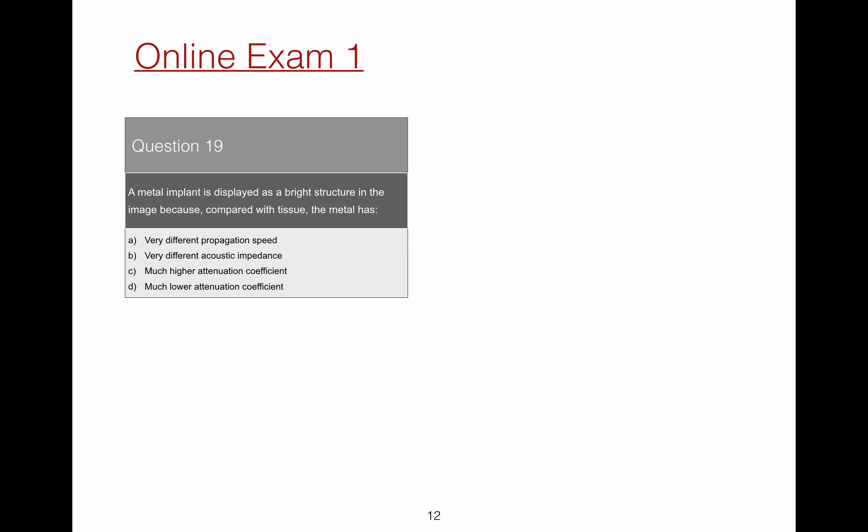Question 19. A metal implant is displayed as a bright structure in the image because, compared with tissue, the metal has what? Well, metal appears bright because it is a strong reflector. The degree of brightness is related to acoustic impedance.